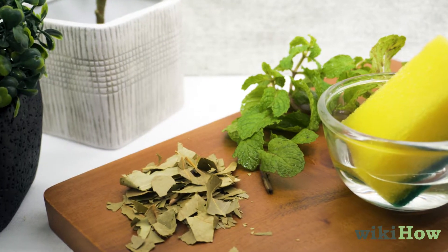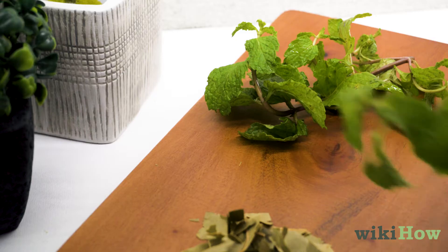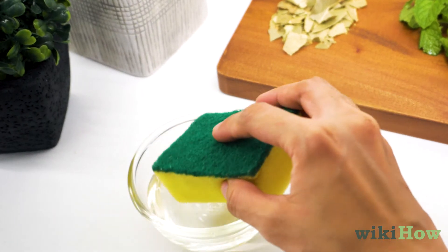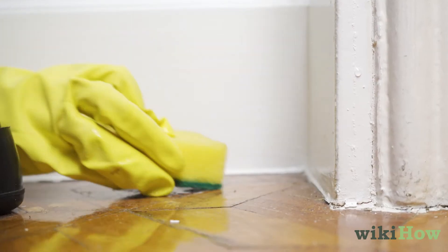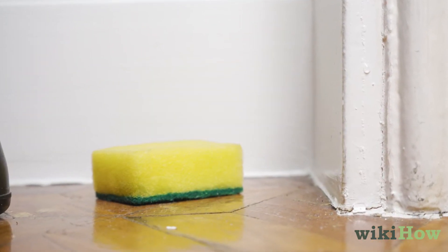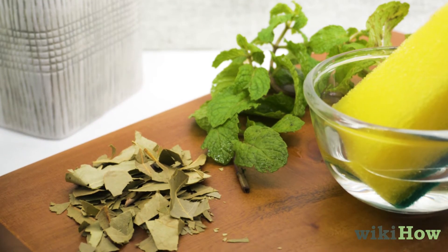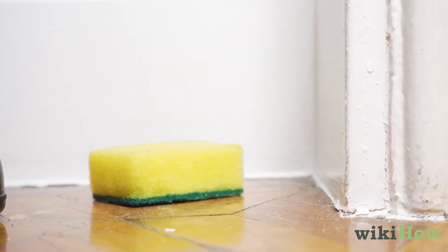For a natural solution, try placing crushed bay leaves, mint, or a sponge saturated with peppermint oil in the corners of your home. These items can repel mice, so put them in places where you've seen mice before.